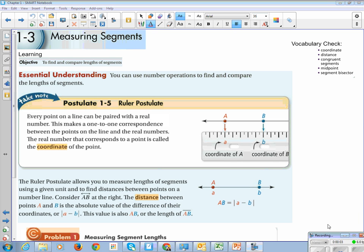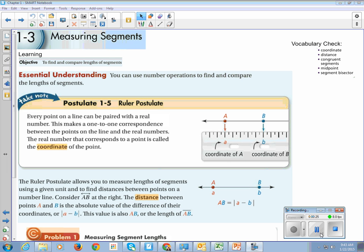Okay, so for this section, this is Geometry Section 1-3, Measuring Segments. For this section, your vocabulary is the word coordinate, the word distance, the word congruent segments, the word midpoint, and the word segment bisector. When I'm grading your notes, I'm going to look for these five definitions. So at the end, before you turn them in, make sure all these five things are on there.